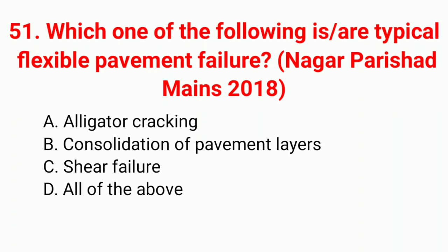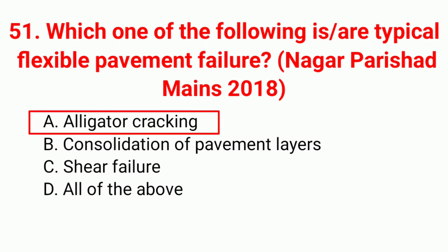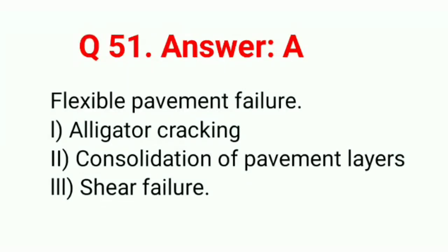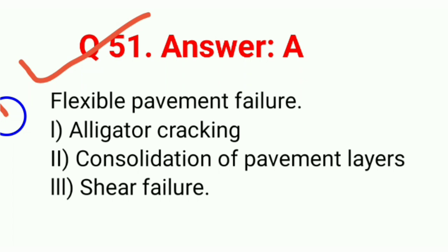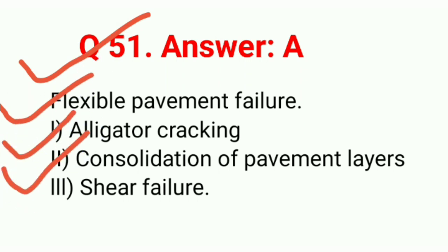Question 51 (last question): Which of the following is a typical physical pavement failure? Correct answer option A: alligator cracking. Flexible pavement failures are of three types: alligator cracking, consolidation of pavement layers, and shear failure.